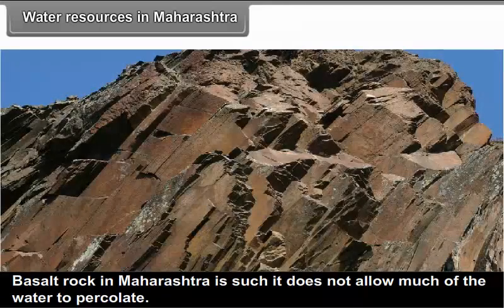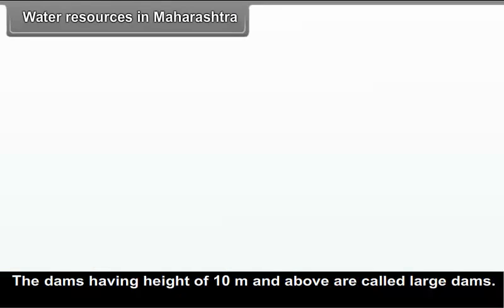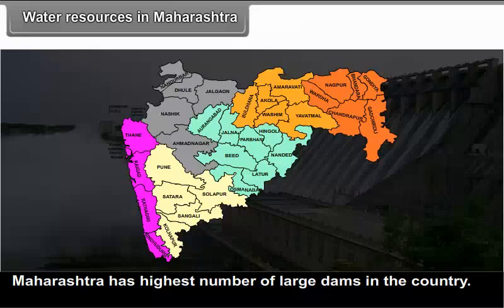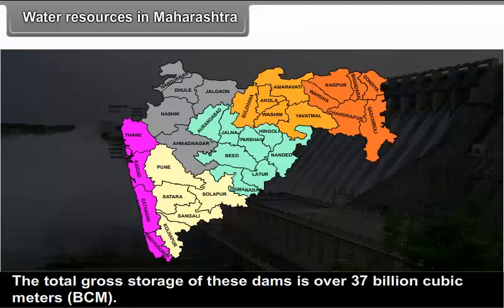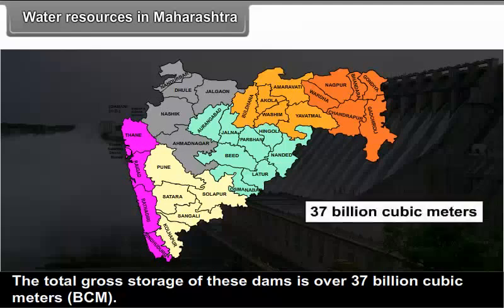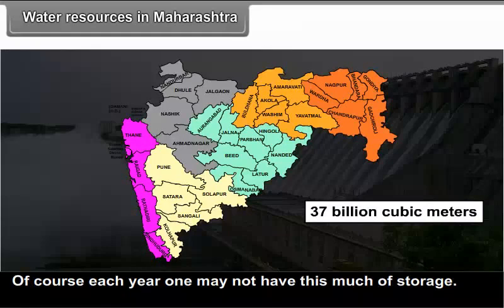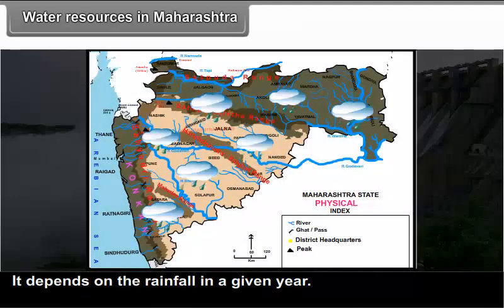Basalt rock in Maharashtra does not allow much water to percolate. Dams having height of 10 meters and above are called large dams. Maharashtra has the highest number of large dams in the country — more than 1800 major dams. The total gross storage of these dams is over 37 billion cubic meters, though actual storage each year depends on rainfall.